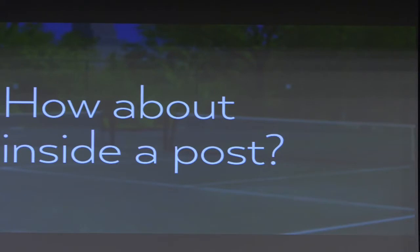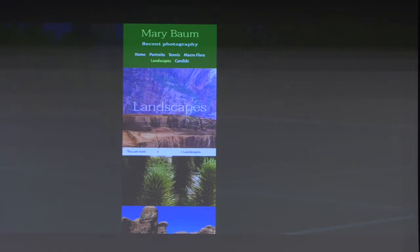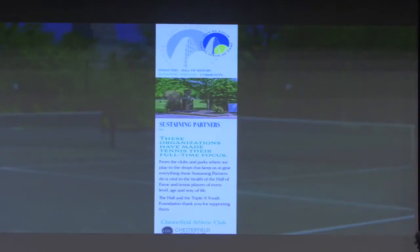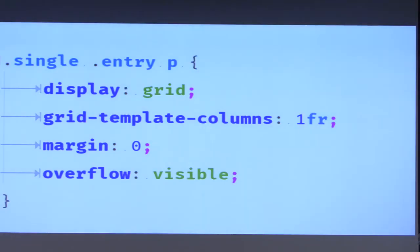Inside a post, you can do the same thing and Gutenberg is going to help us a lot. We're looking at a phone layout here. That's the sustaining partners page from the Hall of Fame, and they're essentially based on this — one tube of content, one fraction. You could also call it 100 viewport width units or 100% and you'd get the same thing.